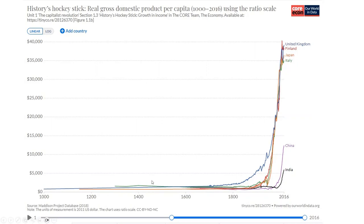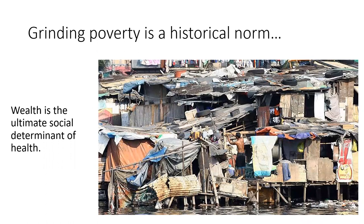I want you to understand the human condition: normal for humanity for almost all of human history has been grinding poverty. We often ask, especially those of us in the United States, why are some people poor? But that's really the wrong question. Poverty is the norm. So really the question is, why are we suddenly rich? And why are so many people now suddenly rich rather than why are there still people who are poor? One of the points you'll hear me make over and over again in this course is: wealth is the ultimate social determinant of health.